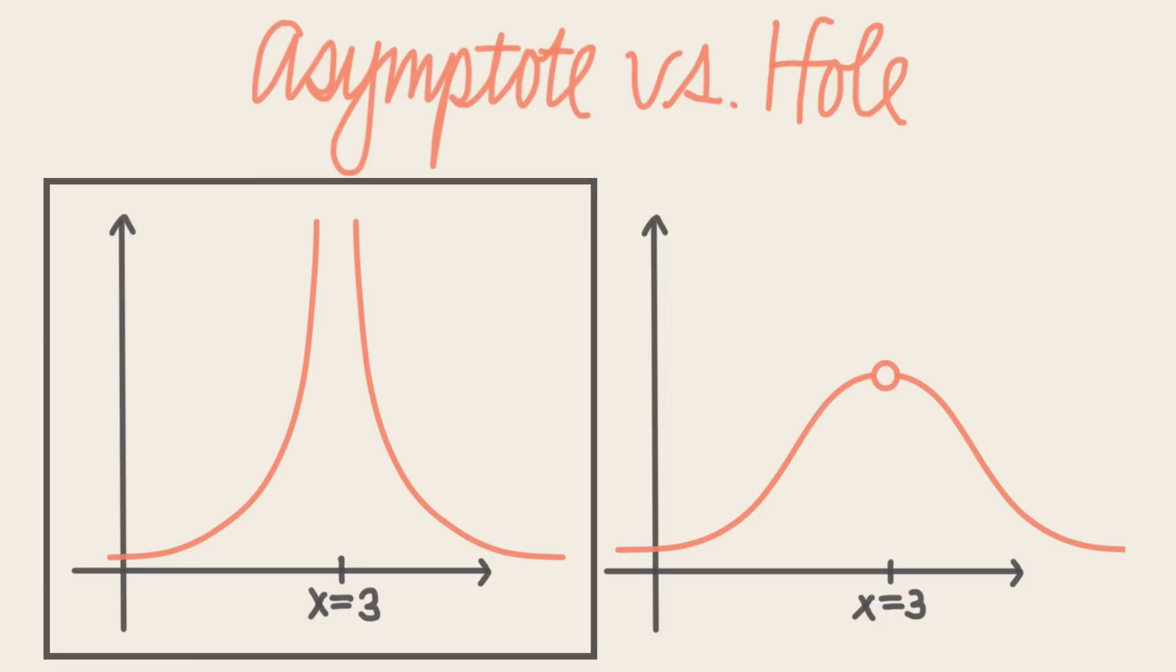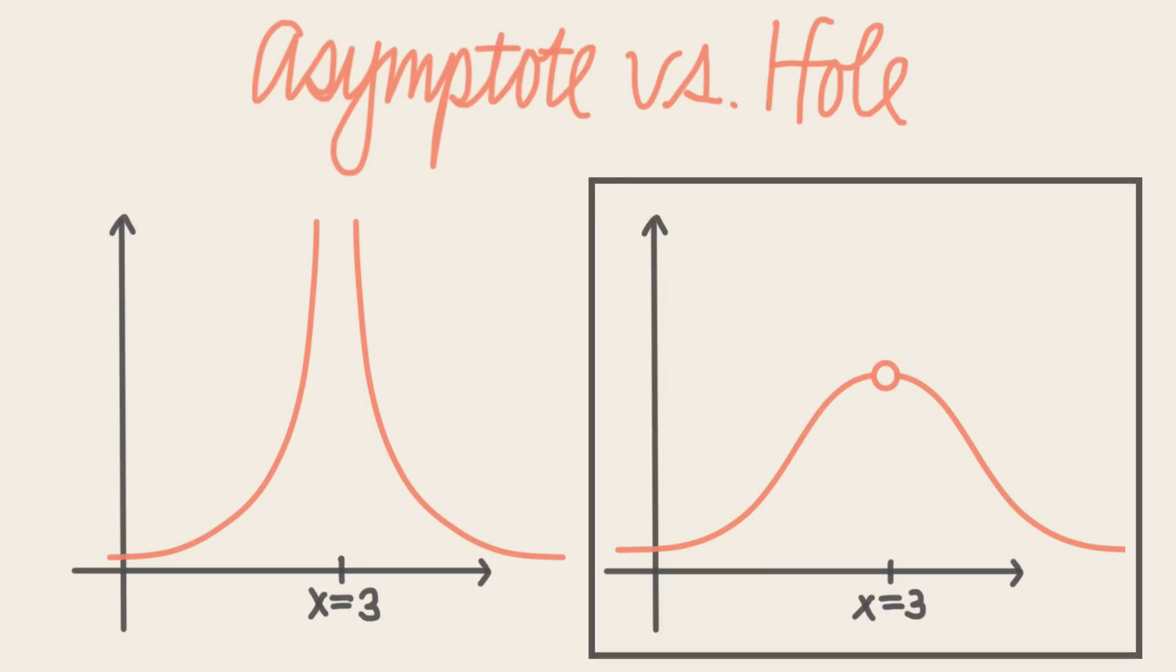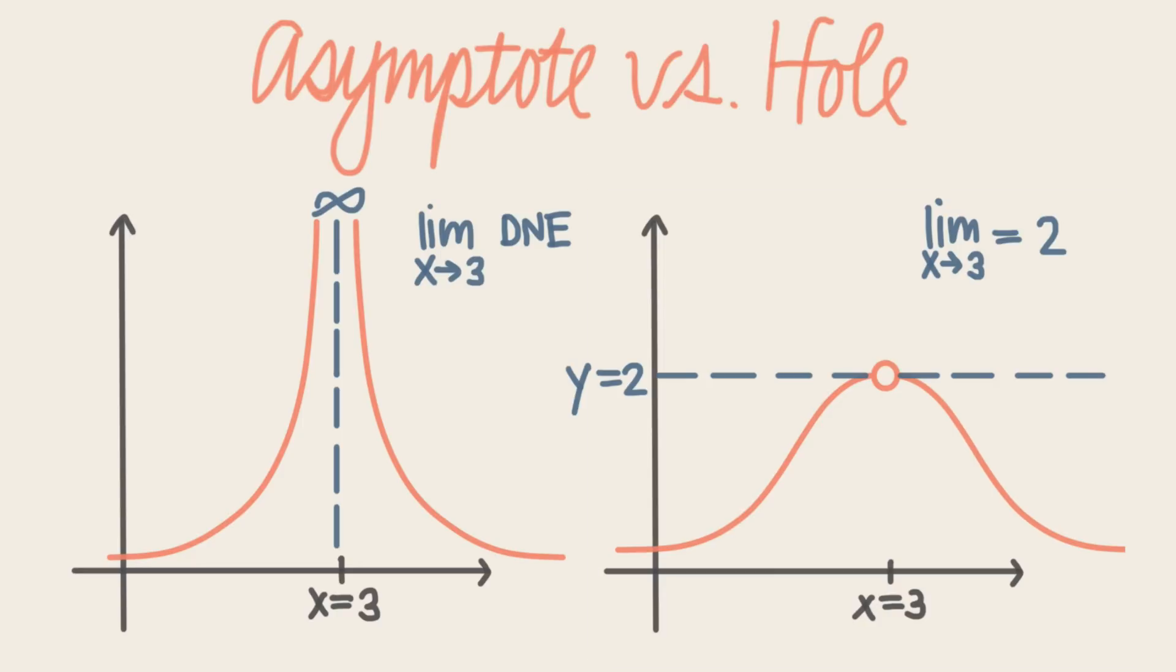Here's a graph with an asymptote at x equals 3, and here's one with a hole at x equals 3. Notice that for the hole, the function approaches a certain y value, 2, as it approaches the undefined x value from both sides. That is, the limit from both sides of the hole is the same.